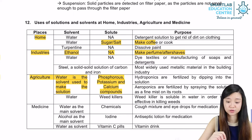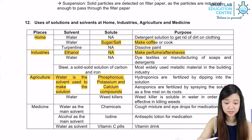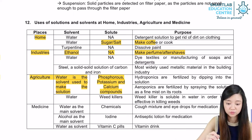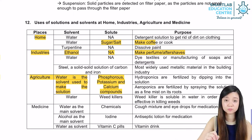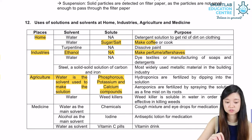In agriculture-wise, if we are going to make fertilizers, we have the phosphorus, potassium, and calcium compounds as the solute, while the water is going to act as the solvent.